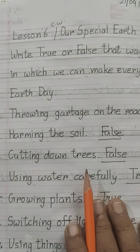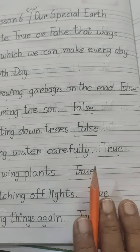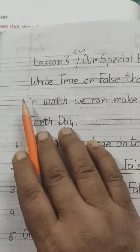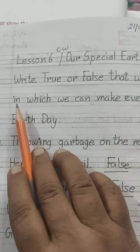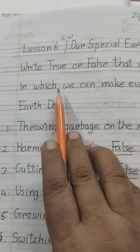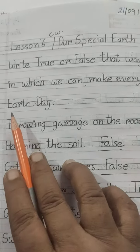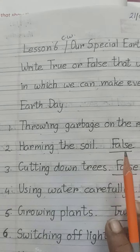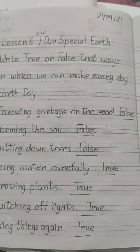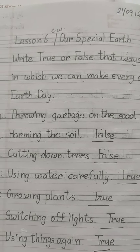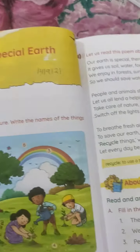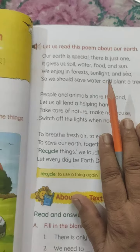So children, those works we are not doing, we are writing false, and those works we are doing, we are writing true. This is your today's work. You do it carefully in your literature notebook and also your book. And also, you have to read this chapter.